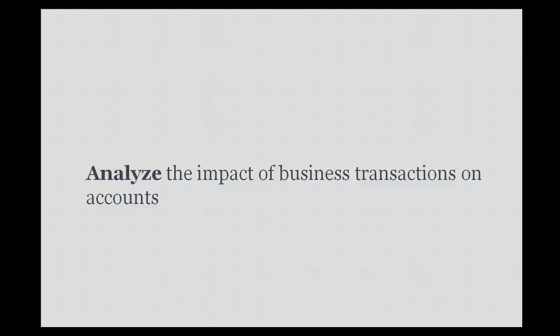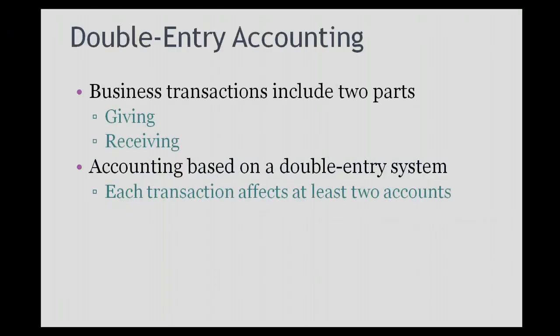In the last section you saw how transactions impacted the accounting equation. Now we're going to analyze the impact of business transactions on the accounts. Transactions are entered into accounts using double entry accounting. Business transactions include two parts: the giving part and the receiving part. We record both parts of the transaction, which is what we call the double entry system. Each transaction therefore affects at least two accounts.